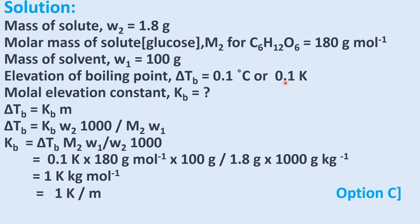Elevation of boiling point, represented by delta Tb, is 0.1 degree Celsius, which in terms of Kelvin is 0.1 Kelvin. You are not supposed to add 273 here, because it is not a temperature being converted to Kelvin — it is the difference in temperature (Tb − T0b), which remains as it is.